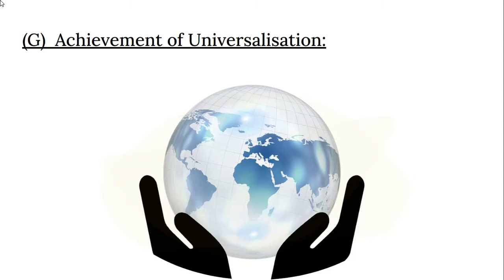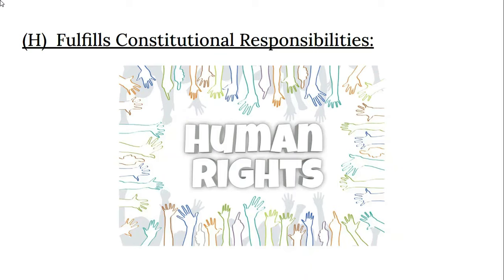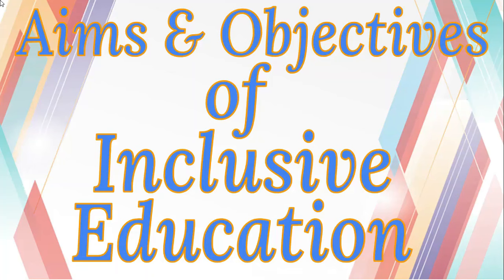The seventh importance is the achievement of universalization — if one achieves universalization, one can achieve socialization, which is the extension of the area and range of those who share in a common good. The eighth importance is fulfilling constitutional responsibilities, such as respecting the national flag and national anthem, obeying laws, protecting the unity and integrity of the country, and safeguarding public property.